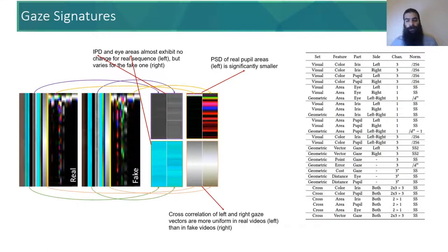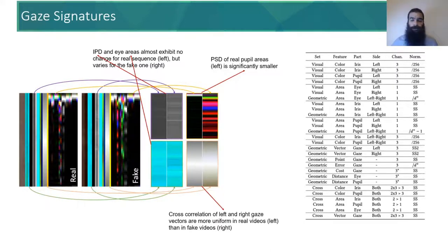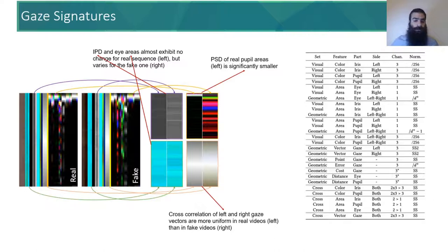We then create gaze signatures with these features from different domains, with a size of 40 by omega by 3 as listed on the right. Looking closely at the signatures, some significant differences between real and fake videos are visible. For example, the power spectral density of areas of different parts of the eye across frames are much more colorful for fake eyes, and our cross-correlation of left and right gaze vectors is much more uniform for real ones.